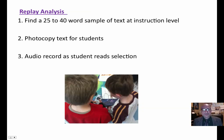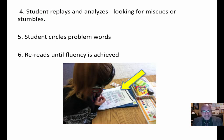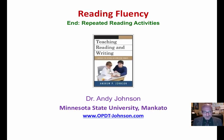Replay analysis — this one works great. Find a 25 to 40-word sample of text at their instructional level. Photocopy it and give one to the students. They audio record themselves as they read the selection, then listen back. They replay and analyze, looking for miscues or stumbles, and circle the problem words. They reread until fluency is achieved. You can do this in partners — a teacher does not need to be there once you teach students how to do this. Replay analysis works really well. Just some very simple, repeated reading activities.